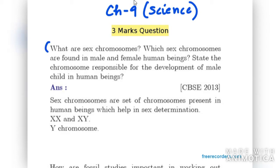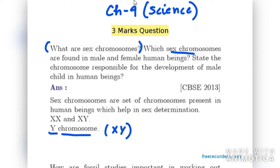Sex chromosomes are a set of chromosomes present in human beings which help in sex determination. For male, you need to write XY, and for female, you need to write XX. For the male child, it is the Y chromosome, as the male child has XY sex chromosomes. Therefore, the Y chromosome is responsible for the development of a male child in human beings.